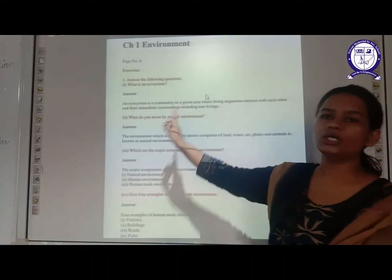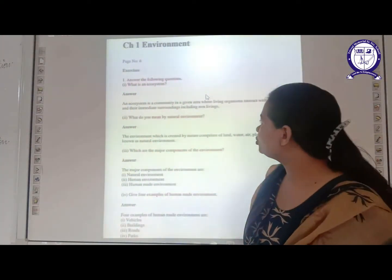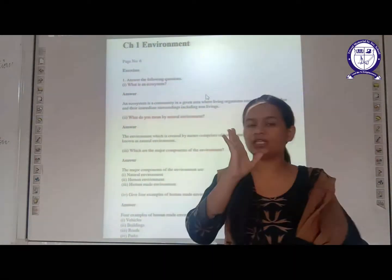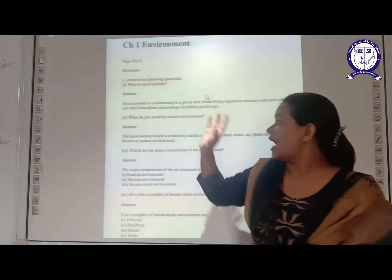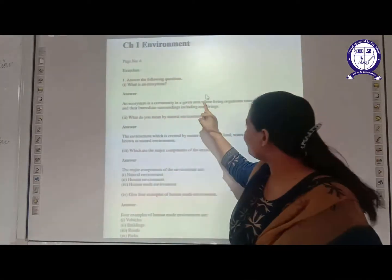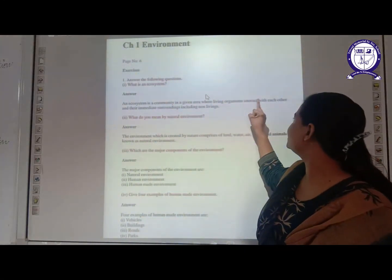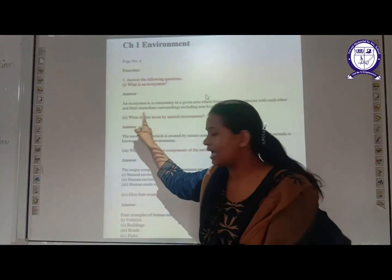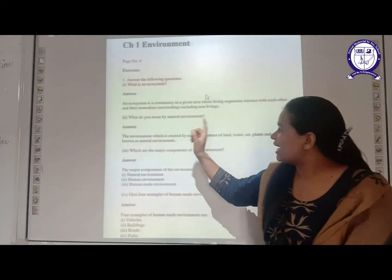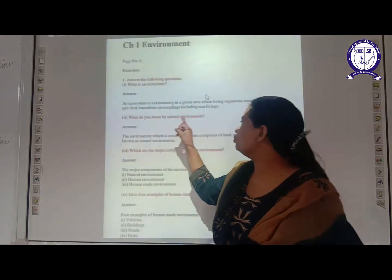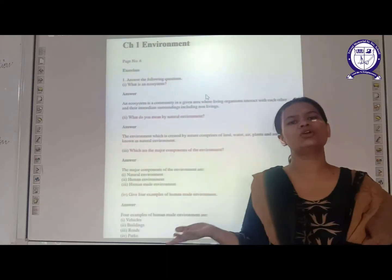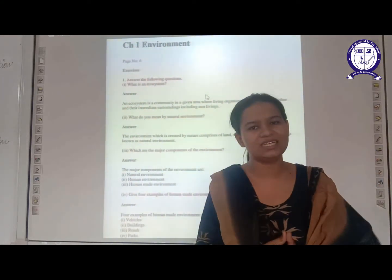Let's come to the question and answers of this chapter. The first question is: what is an ecosystem? We have discussed this in detail. An ecosystem is a community in a given area where living organisms interact with each other and with their immediate surroundings. The next question is: what do you mean by natural environment? You don't need to cram things — you can write the answer in your own words because the concept is clear to you.